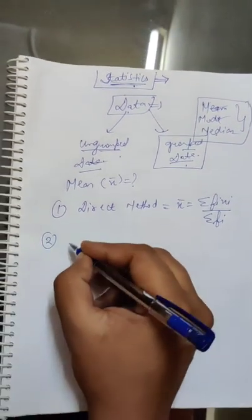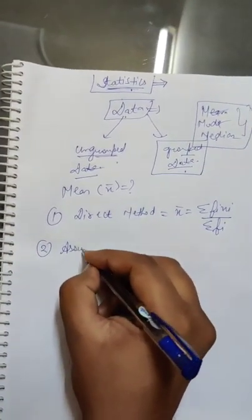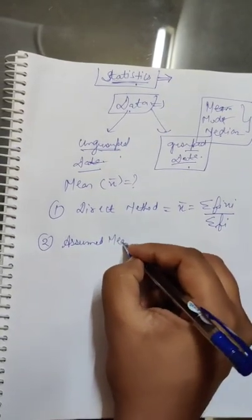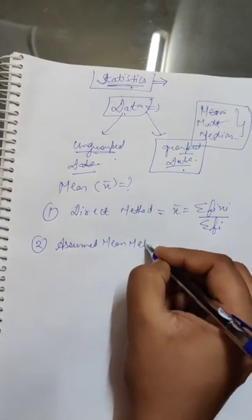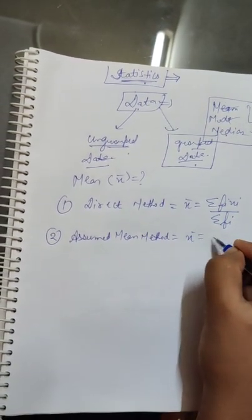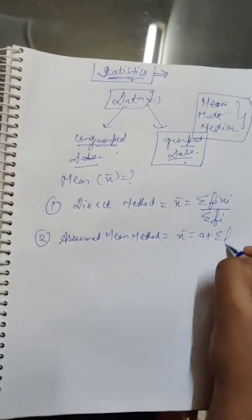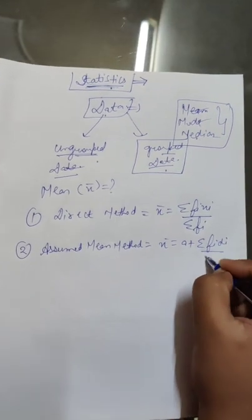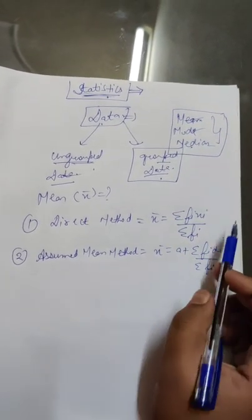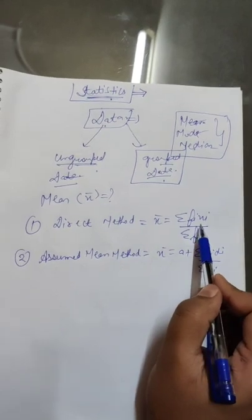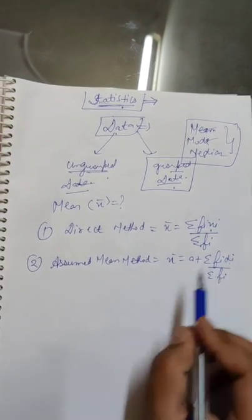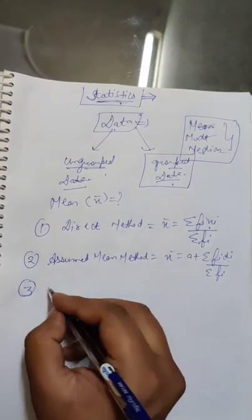The second method is the assumed mean method. The formula is: x̄ = a + Σ(fᵢdᵢ) / Σfᵢ. Here fᵢ is the frequency, xᵢ is the class mark, and dᵢ is a new variable.